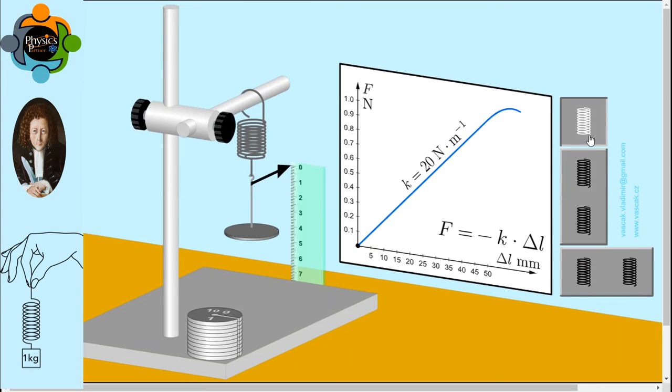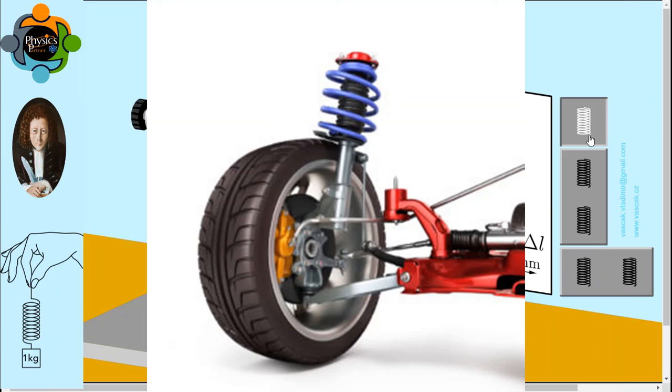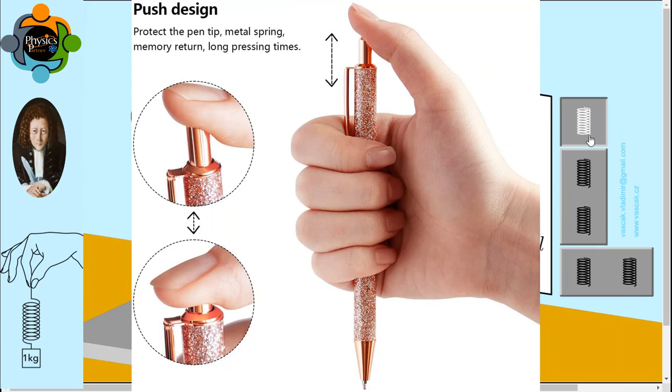Let me give some applications of Hooke's Law in our daily life. For example, spring balance, trampoline enjoyed by children, in the car there are springs, and similarly retractable pens.